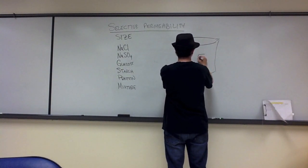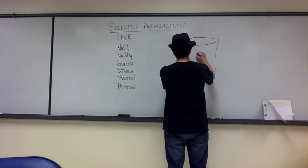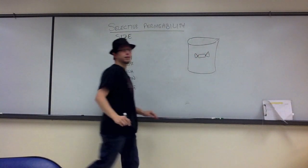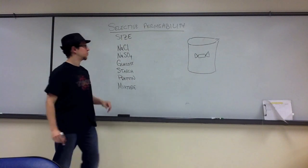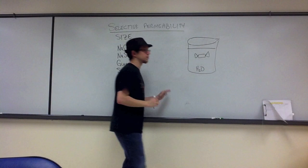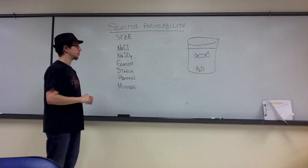So you took some dialysis tubing, and you tied a string around it, made what looked like this little candy container or candy wrapper, and you had this bag that you placed in a beaker, and in that beaker you placed water. And you let that sit for about half an hour to 40 minutes.